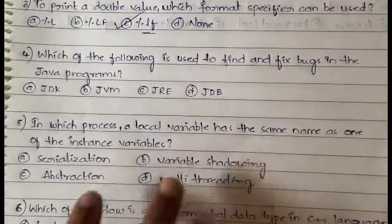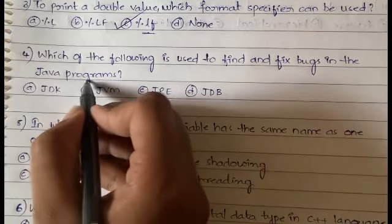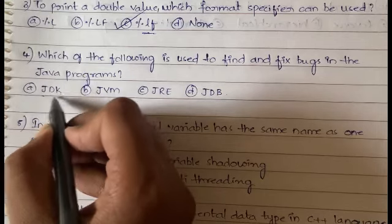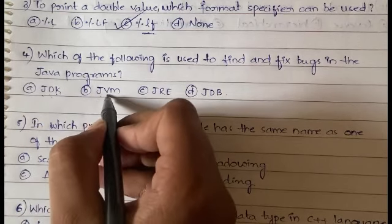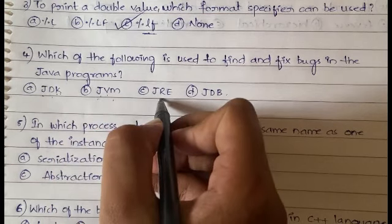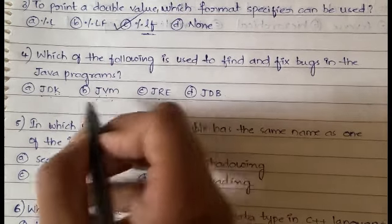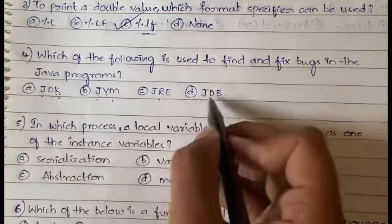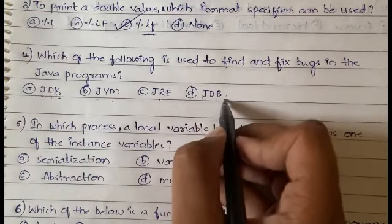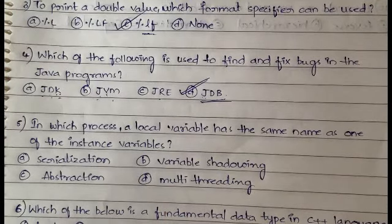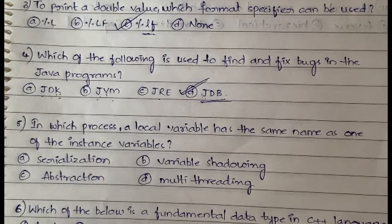Which of the following is used to find and fix bugs in a Java program? JDK is the development kit, JVM is Java Virtual Machine, JRE is Java Runtime Environment. JDB means Java Debugger, which is what we use to find and fix bugs in Java programs. It is mainly used for debugging the code.